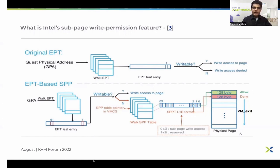The L1 entry of the SPP table is a 62-bit entry — basically 2 bits for every sub-page of size 128 bytes. Out of every 2 bits, one is reserved and the other indicates write access for that sub-page. A value of 1 means write access is allowed on that sub-page, otherwise it is not allowed. If the SPP bit is set in the L1 entry of a GFN in EPT, that means sub-page level tracking is enabled for that GFN and we need to traverse SPPT to get the write access permission for that sub-page.